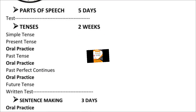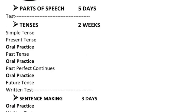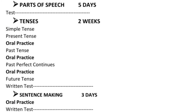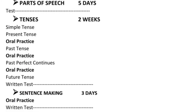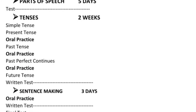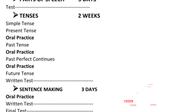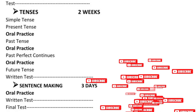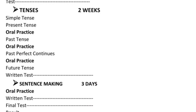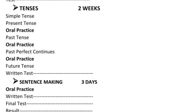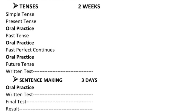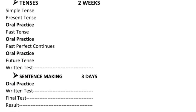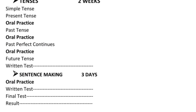Let's look at the outlines of the course. First of all, in five days we will cover parts of speech. Then in two weeks there will be a test, followed by tenses. The tenses will be completed in two weeks — simple tense, present tense, and all types of the present tense.